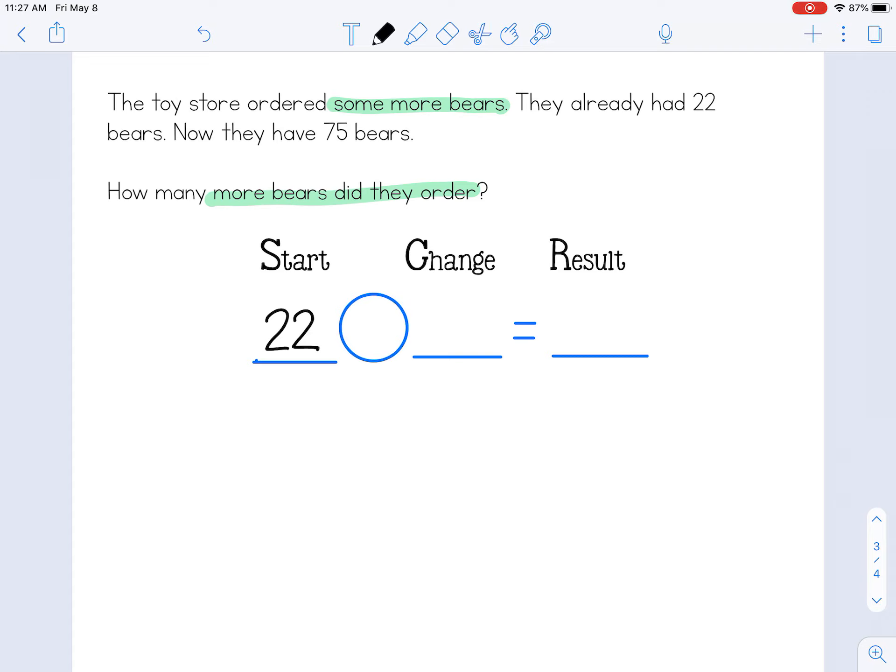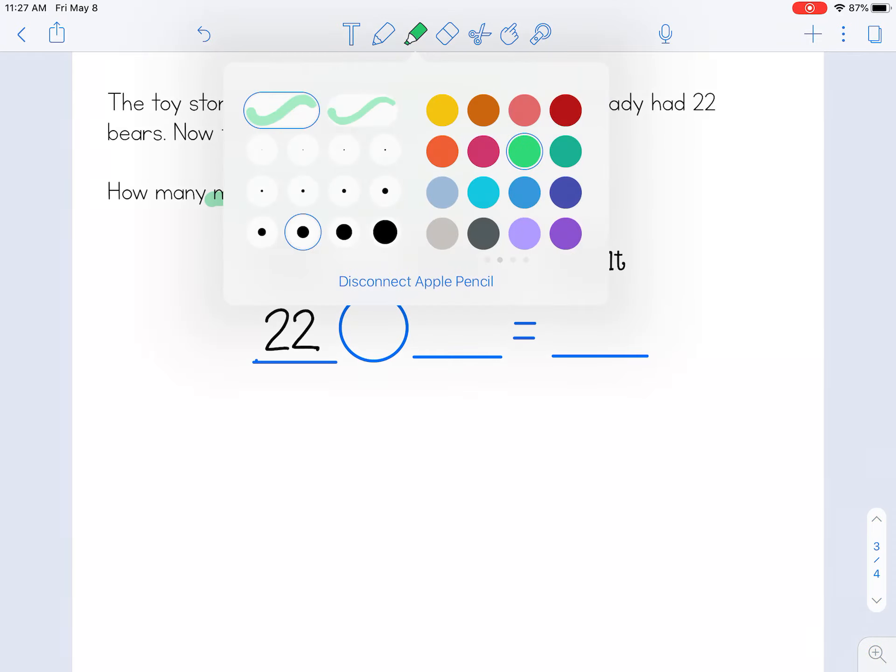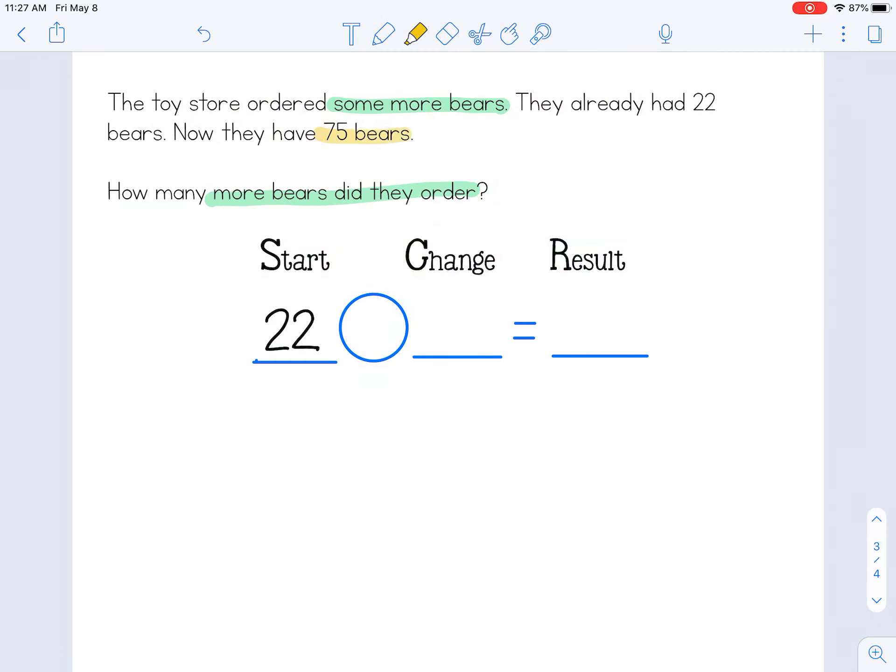Then it says now they have 75 bears. Where do you think the 75 should go? Did you say the result? Well, if you did, you are correct. Now they have 75 bears, meaning they end up with 75 at the end.